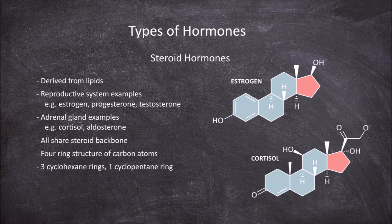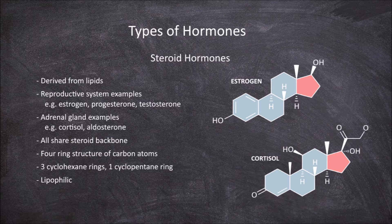Steroid hormones, unlike peptide hormones, are lipophilic, which means they are fat loving and are able to move through the cell membrane. Once inside the target cell they bind to receptors within the cell, either in the cytoplasm or nucleus. Once bound to the receptor within the cell they form an active receptor hormone complex.